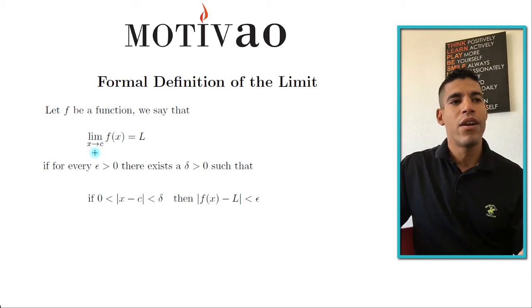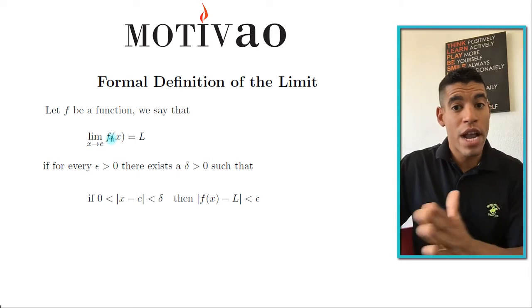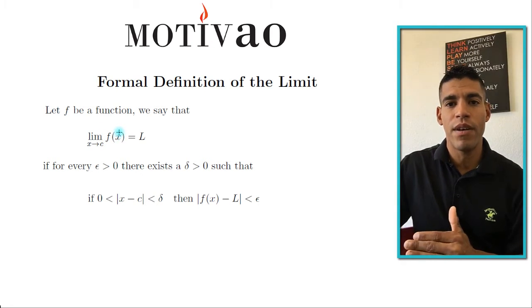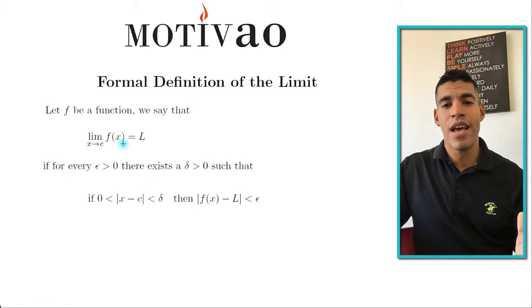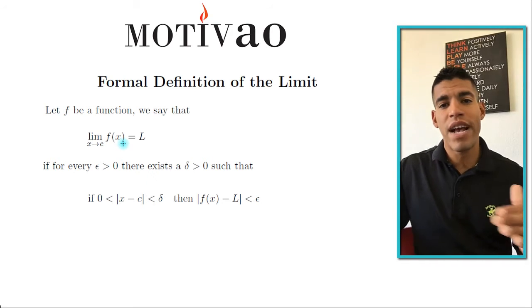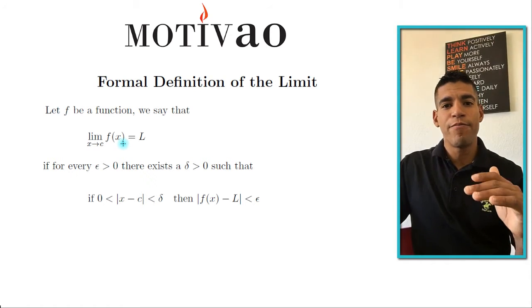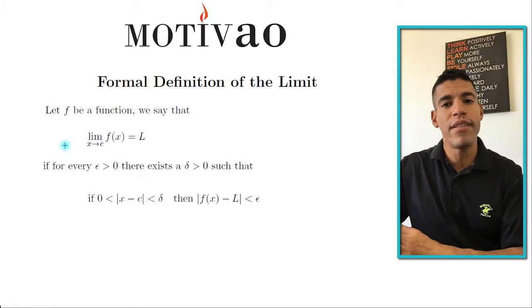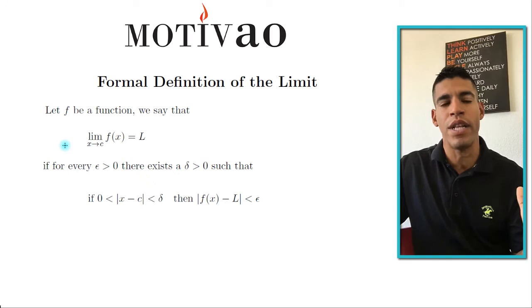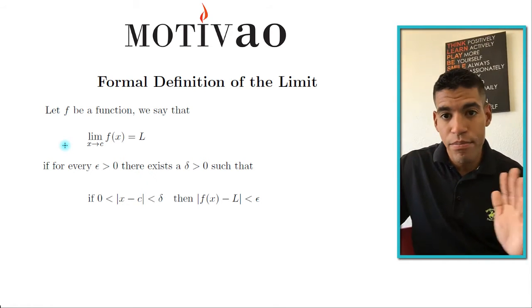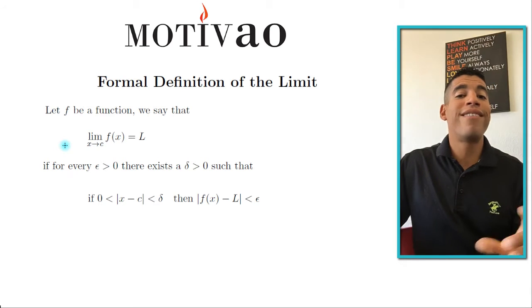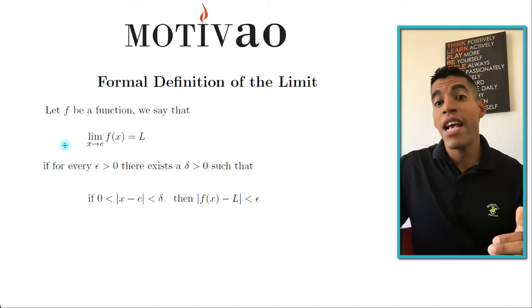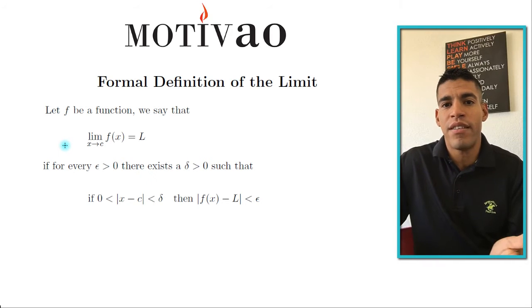Now let's talk about c. Where is c? c is in the domain of the function. In more advanced mathematics, c is defined as a limit point of the domain, which has a topological representation, but for now just think of c as being in the domain. c is any real number in the domain, and x is a variable that also represents a real number in the domain.